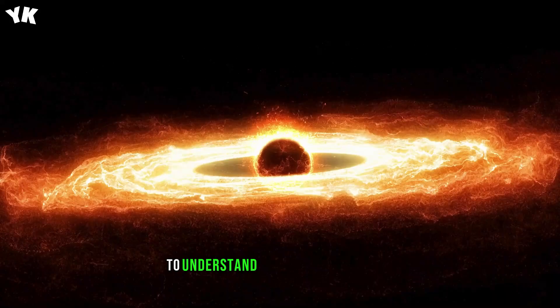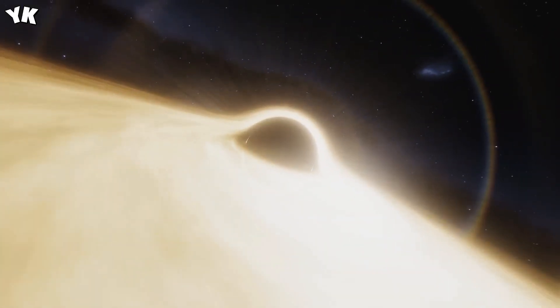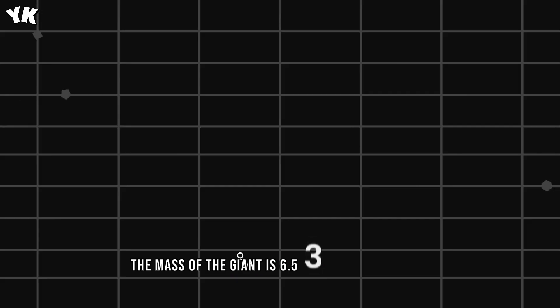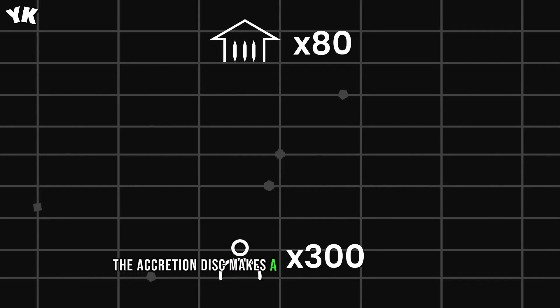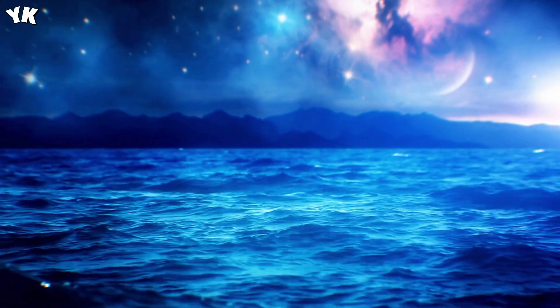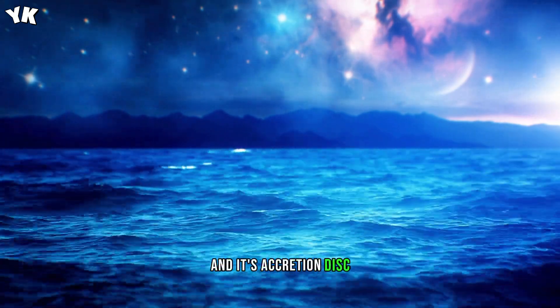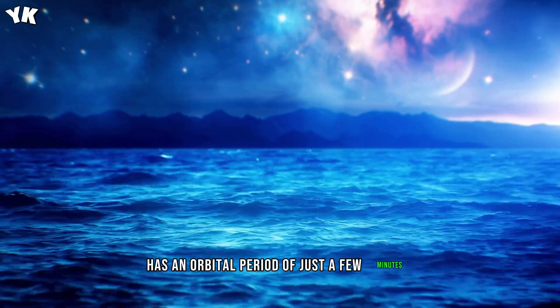To understand all the complications, let's go back to the black hole from the M87 galaxy. The mass of the giant is 6.5 billion solar masses. The accretion disk makes a rotation around its center within a span of several days or weeks. Sagittarius A asterisk is much smaller and its accretion disk has an orbital period of just a few minutes.